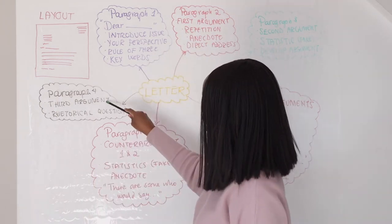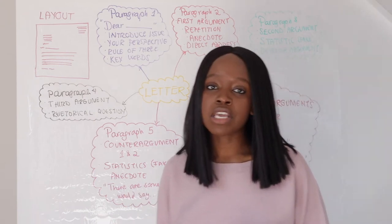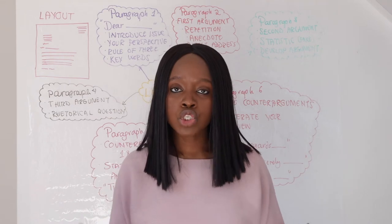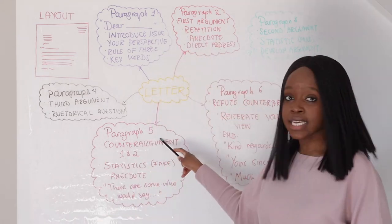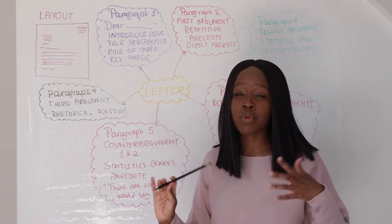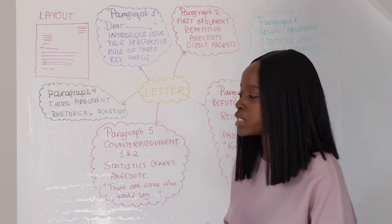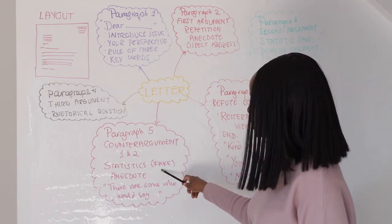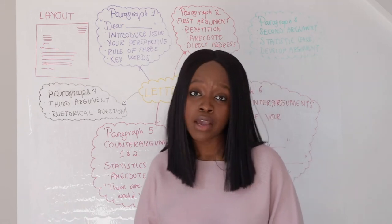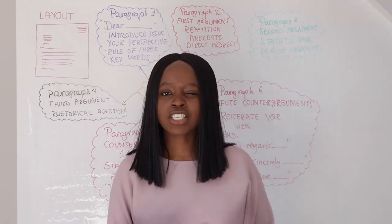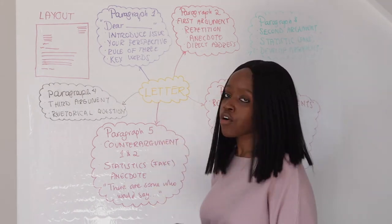In paragraph four, present your third argument and use a rhetorical question to round it off. However, since this is an argument, you'll also be tested on whether you can balance and consider counter arguments. I would suggest allocating paragraph five to counter points — why people may disagree with you. Introduce these by saying 'there are some who would say...' or 'there are some who disagree with me.' Give two counter arguments and include a counter statistic — for example, researchers from the University of Cambridge found that people polled in Oxfordshire didn't believe climate change was an issue. You can also include an anecdote here.